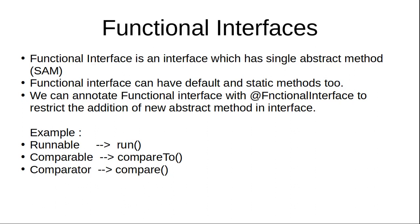Sometimes by mistake we might attempt to add one more abstract method inside a functional interface. To avoid such scenarios, Java 8 introduced the @FunctionalInterface annotation. If you add this annotation on top of your functional interface and then try to add a second abstract method, it will immediately throw a compiler error.